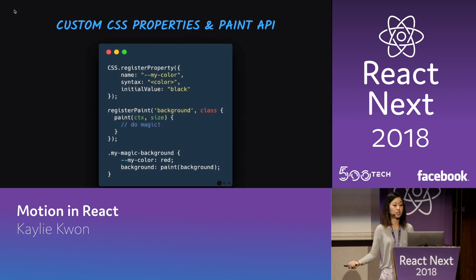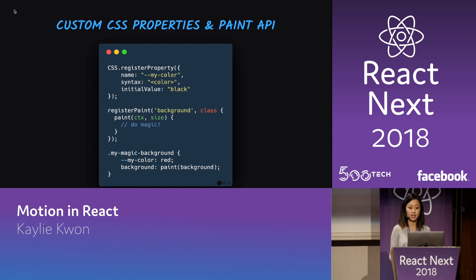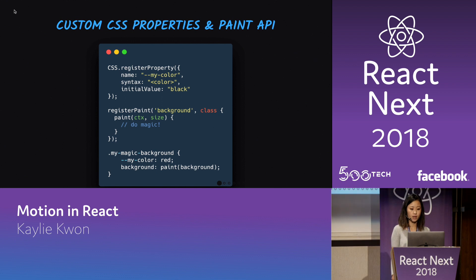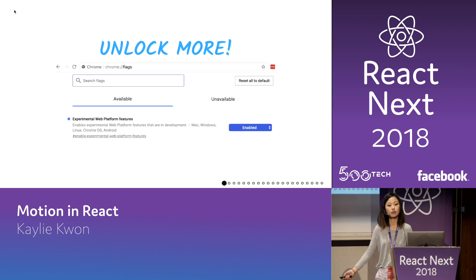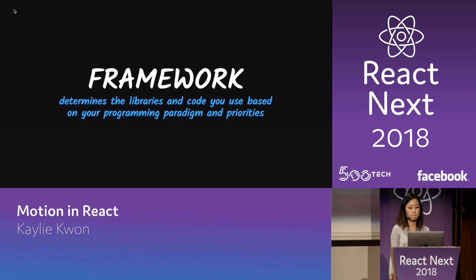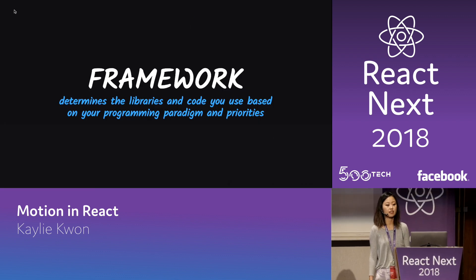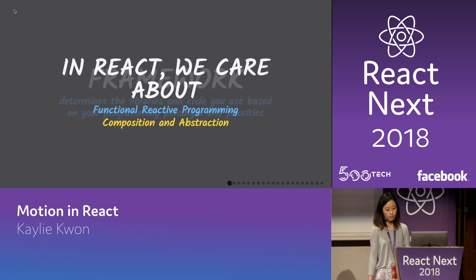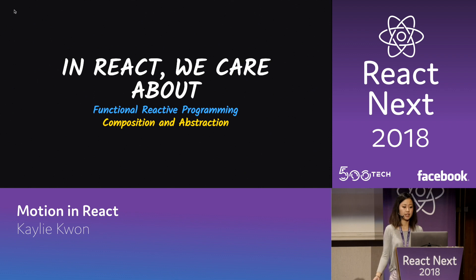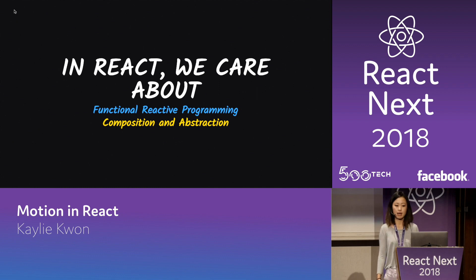Another cool feature coming is custom CSS properties and the Paint API, which means you could register custom CSS properties in the rendering engine you're running, as well as your own methods. You can unlock more right now by going to chrome://flags. So let's talk about the next step, which is the framework. The framework determines the libraries and code you use based on your programming paradigm and priorities. In React, we care about two things among others: functional reactive programming, and composition and abstraction.